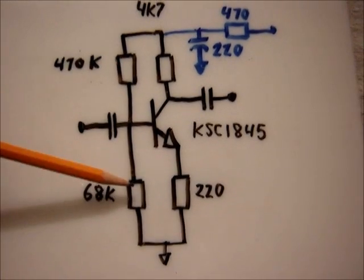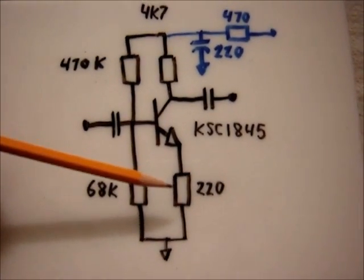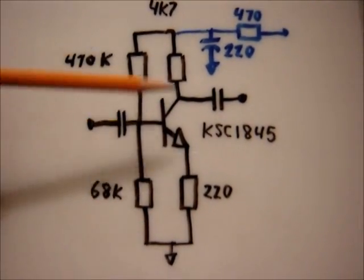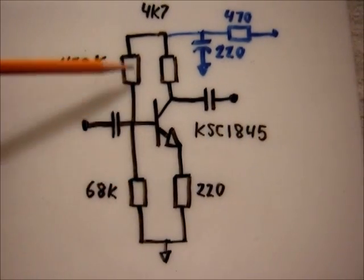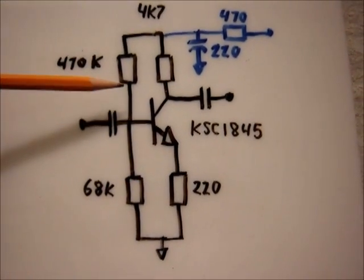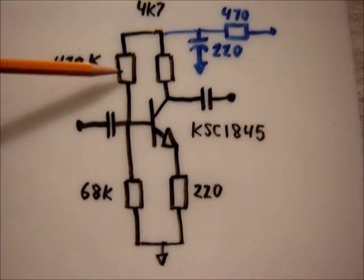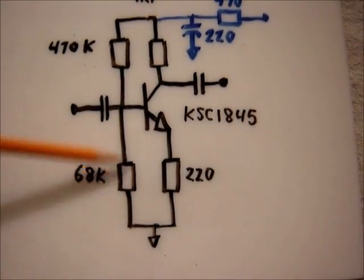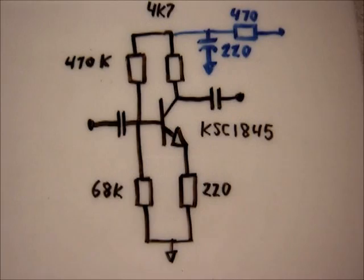These four resistors set the parameters for the amplifier. If I change any one of them, it screws up how the amplifier is biased and I'd have to recalculate and put in new values of resistors.